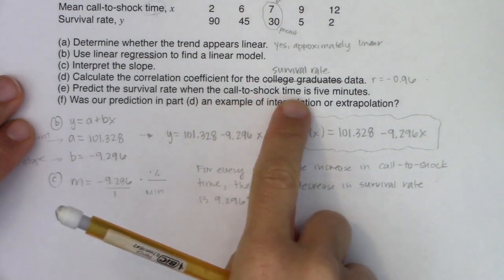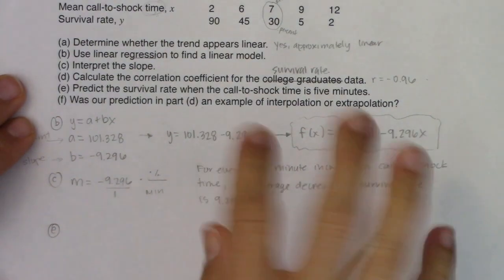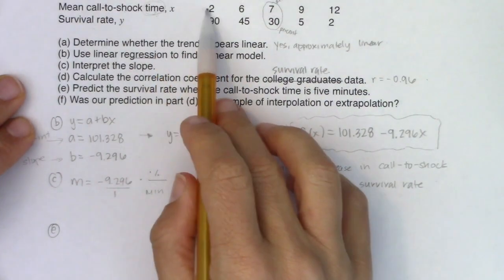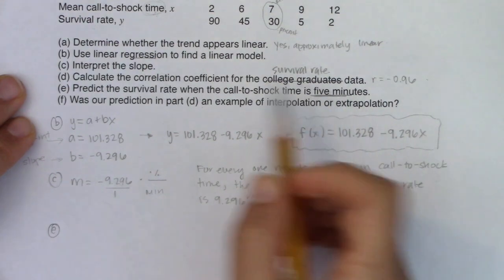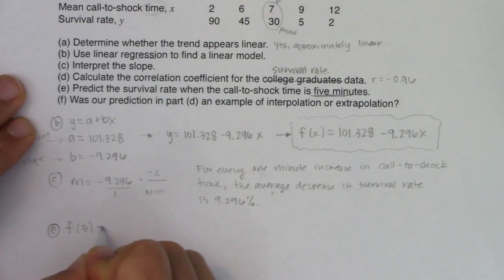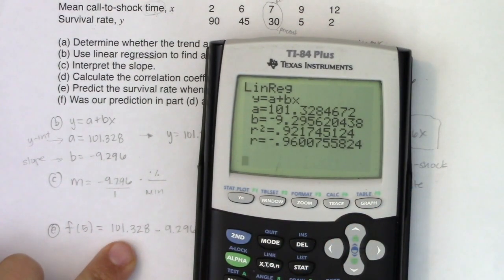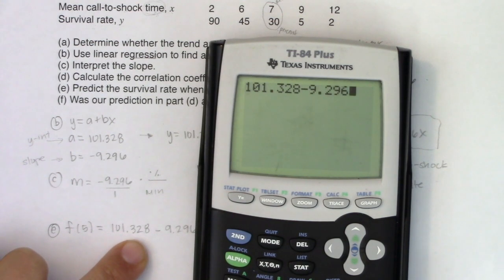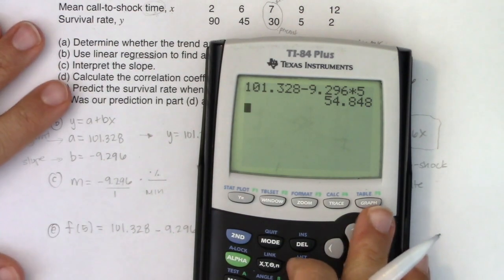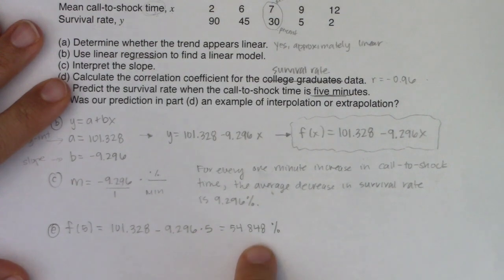It says predict the survival rate when the call to shock time is five minutes. And again, I chose this number because this was the same number for my friend. I was curious what her likelihood of making it out of that ICU was. I don't have a base year in this problem. So I don't have any kind of base year. So this is five minutes. Now is five minutes an X value or a Y value? Well, it's an X value. It's got the units of minutes. So I would like F of five. So I'm going to do 101.328 minus 9.296 times five. And you can get this number in a couple of ways. You can do it from your calculation screen. And you will get 54.848 percent. And I put percent because this is a predicted Y value and the units on Ys are percentages.